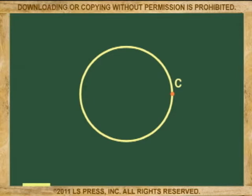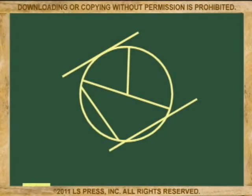A circle, of course, has a center, which is normally identified with the letter P. Now, these are the parts of a circle.